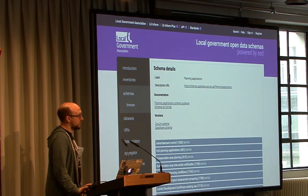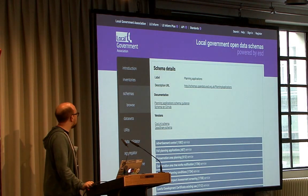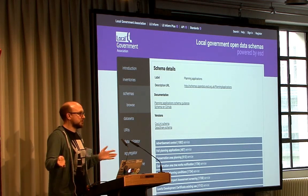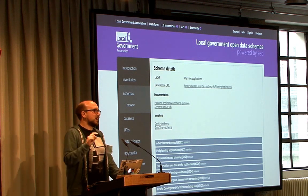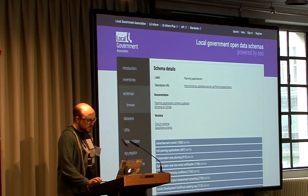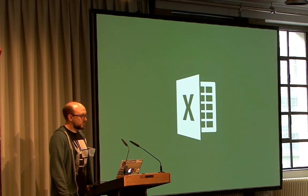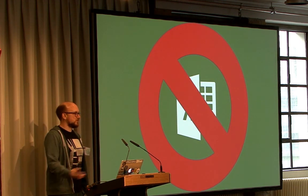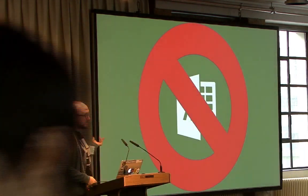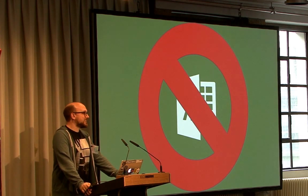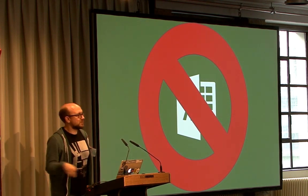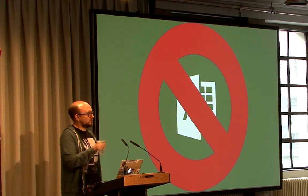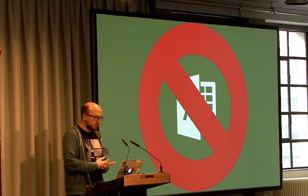One of the biggest users of CSV Lint schemas has been the Local Government Association in the UK. They offered funding to local councils to help publish their data, providing it met a given schema. People would get the CSVs out of whatever system they were using, go on to CSV Lint and check if it met the schema, and if it did, they uploaded it. But the main issue is a lot of people are still using Excel to generate CSV files, generally via save as. Excel is designed for building spreadsheets, and spreadsheets are not CSVs.